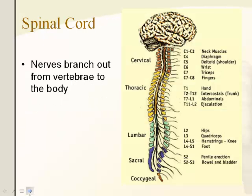Finally, the spinal cord — nerves branch out from the spinal cord. Whatever is damaged or severed, anything below that point won't work. For example, damage to C1–C3 means anything below your neck muscles won't function. Hope that helps — bring any questions you have!